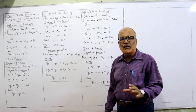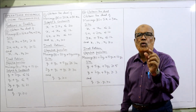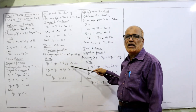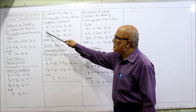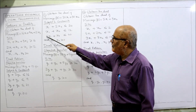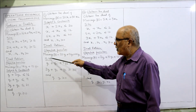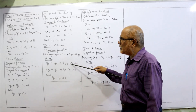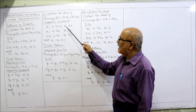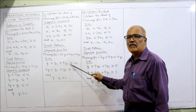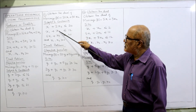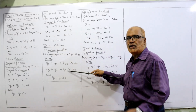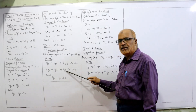For the dual constraints, the vertical columns of the primal become horizontal rows in the dual, with coefficients unchanged. For X1: vertical coefficients are 1, 1, 5 — making horizontal: Y1 + Y2 + 5Y3. The primal inequality was ≤, so it becomes ≥. For X2: vertical coefficients are 2, 1, 1 — making horizontal: 2Y1 + Y2 + Y3.